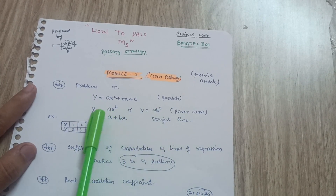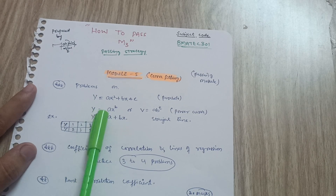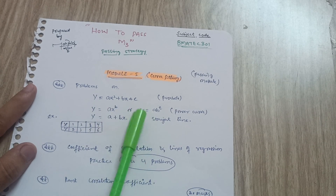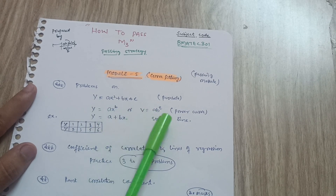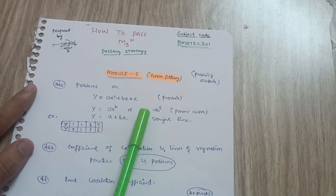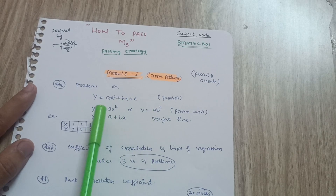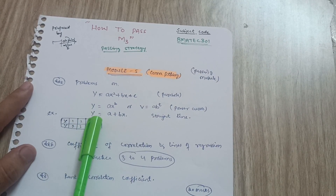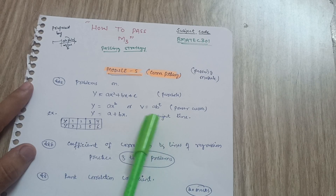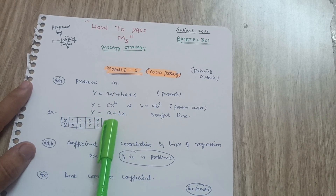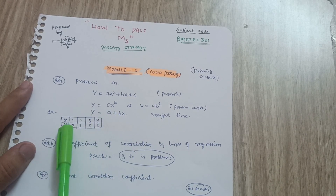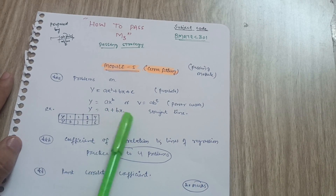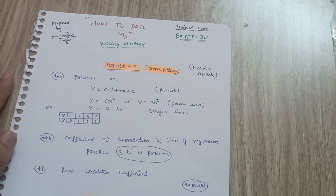The second topic in Module 5 is the power curve — questions like 'fit a curve y = ax^b' or sometimes 'V = ab^t.' These are the same thing, so no need to be confused — the procedure is the same. Next is the straight line: 'fit a straight line y = a + bx.' A table of x and y values will be given. I have covered all varieties in my problem-solving videos.